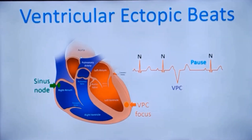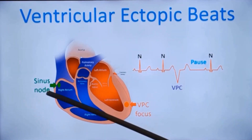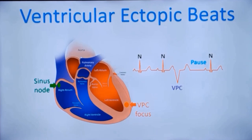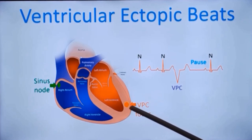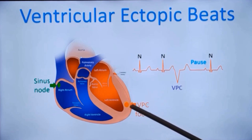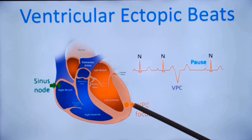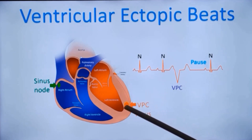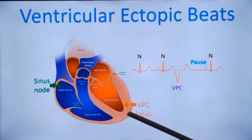Normal heart rhythm originates from the sinus node, which is the natural pacemaker of the heart. But in ventricular ectopics, it is exactly from the opposite location. The focus originates from the ventricle, usually due to increased irritability or some other mechanism — it could be re-entry or triggered activity. Some mechanism is causing an extra focus to fire from the ventricle.